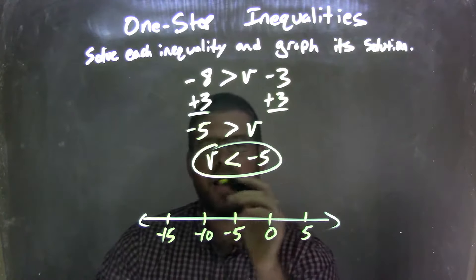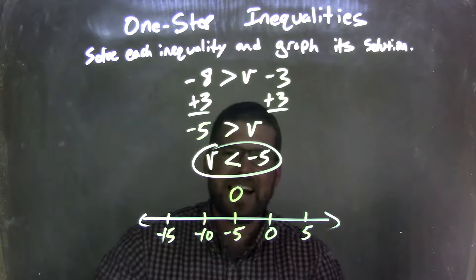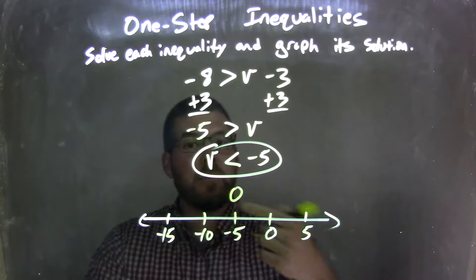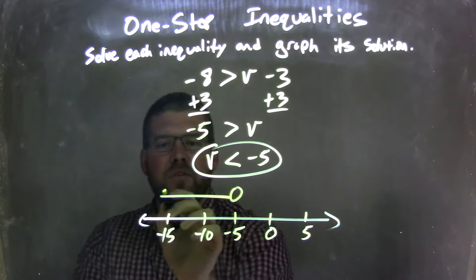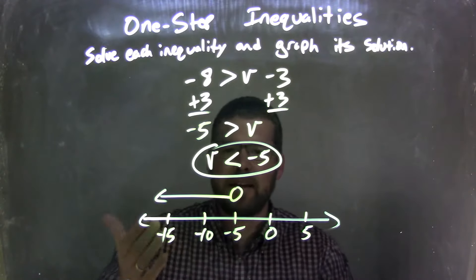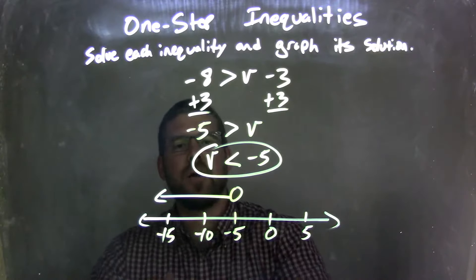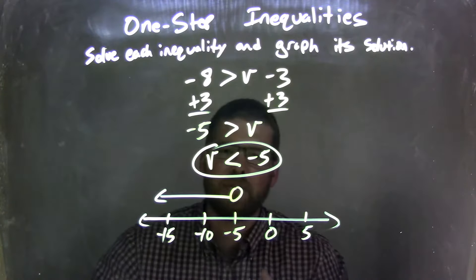Well, if v is less than negative 5, it's not equal to... I'm going to put an open circle here at negative 5. Then we said v was less than negative 5. So I draw my line to the left from that open circle, indicating that all these values less than negative 5 are values that v can be. So my graph matches up with my inequality of v is less than negative 5.